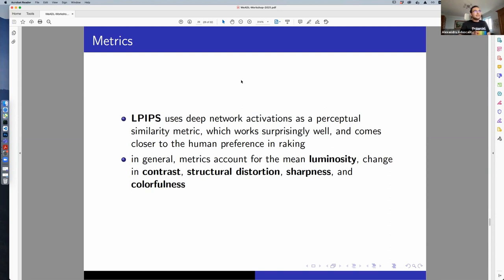One of the metrics that is really nice, in my opinion, is the LPIPS, the Learned Perceptual Image Patch Similarity, which uses deep network activations to check the similarity between two images. It works surprisingly well, and it comes closer to the preference in ranking that humans express.